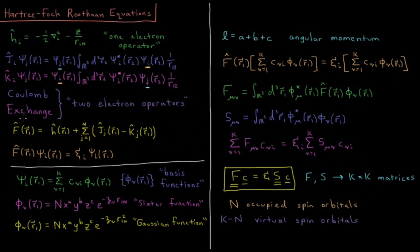So our electron in atomic orbital j feels the average repulsion over all space of electron two in atomic orbital i. The other two-electron operator, the exchange operator K_i acting on an electron in atomic orbital j, gives us the electron now in atomic orbital i, and we integrate over all space the overlap of atomic orbitals i and j for electron two, divided by the distance from electron two to electron one. This exchange operator doesn't have quite a nice classical analog, but we can think of it as arising due to the fact that our wave function has to obey the Pauli exclusion principle — making our wave function a Slater determinant results in this operator.